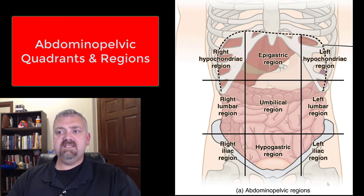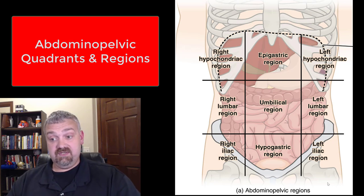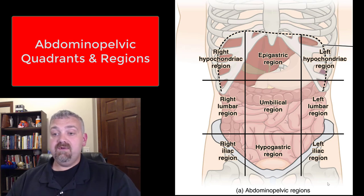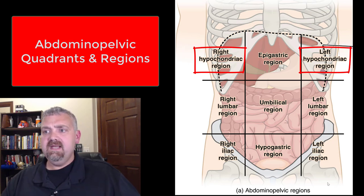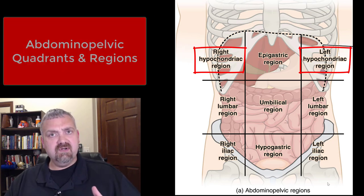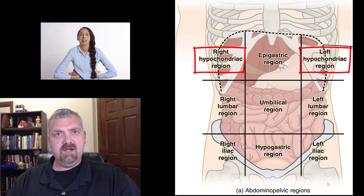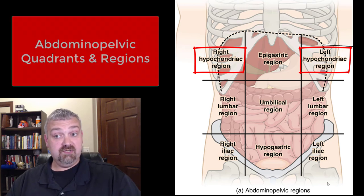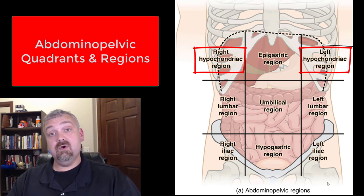Now if you want to get more specific, we break the abdominal pelvic cavity down into nine regions. Starting down one of the sides, we see the left and right hypochondriac region. The term hypochondriac — you generally think of someone who thinks they have every disease they google — but hypochondriac just means 'below the cartilage.' The hypochondriac region is named that because it's right below the costal cartilage, or the rib cartilage.